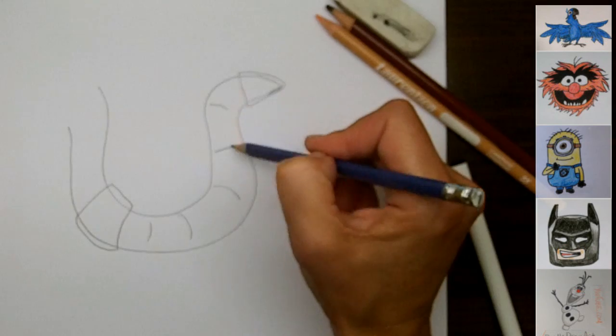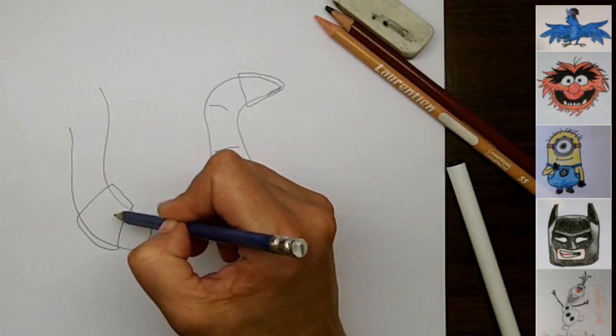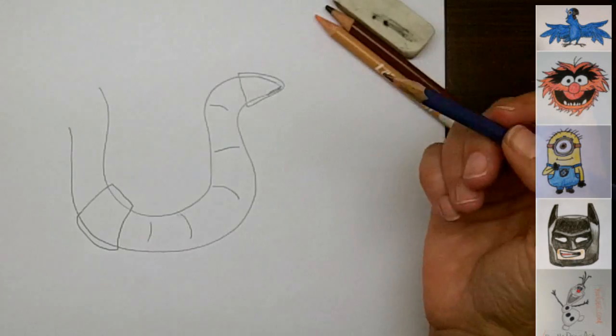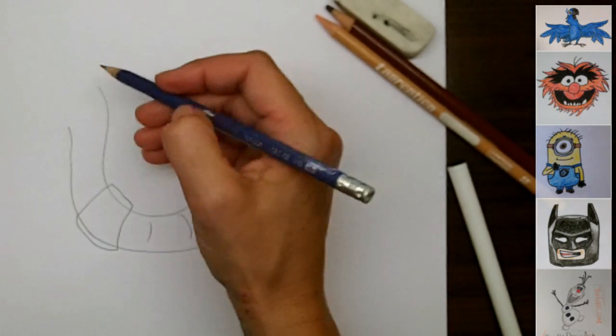So here we go. I've got the worm's body and these two things are called setellum. So that's your biology lesson for today about worms.